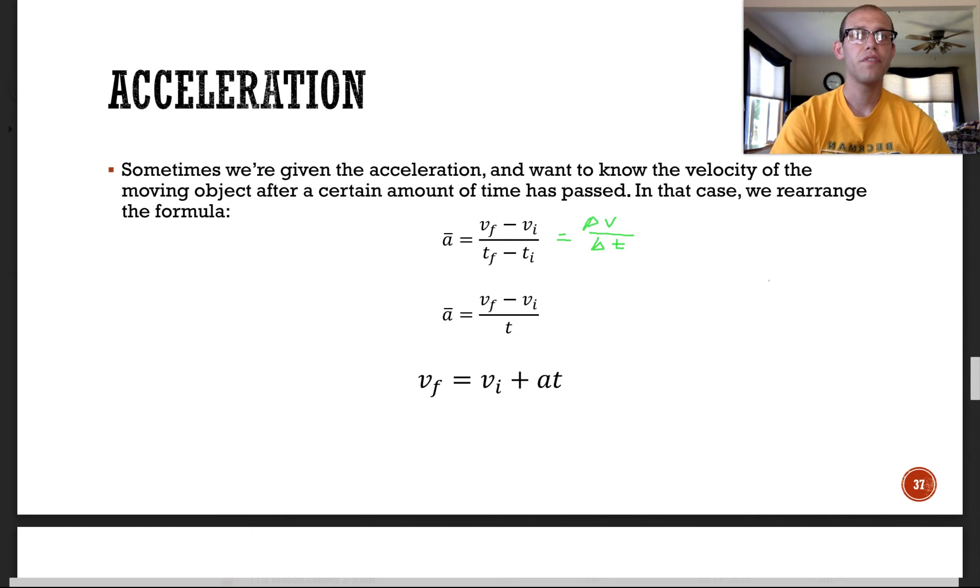So sometimes we're given the acceleration and we want to know the velocity of the moving object after a certain amount of time has passed. In that case, we can rearrange the formula that we know to find what the final velocity will be. So, for example, we start with the average acceleration, which we know to calculate as a change in velocity over a change in time, otherwise broken down by the final velocity minus the initial over the, divided by the final time minus the initial time.